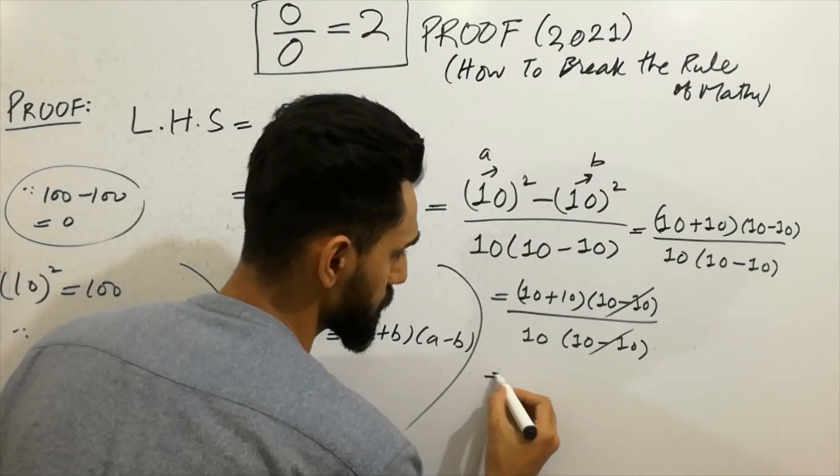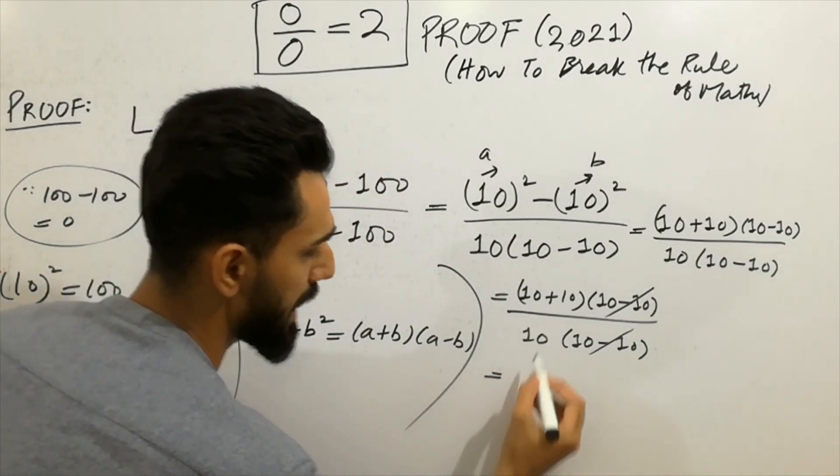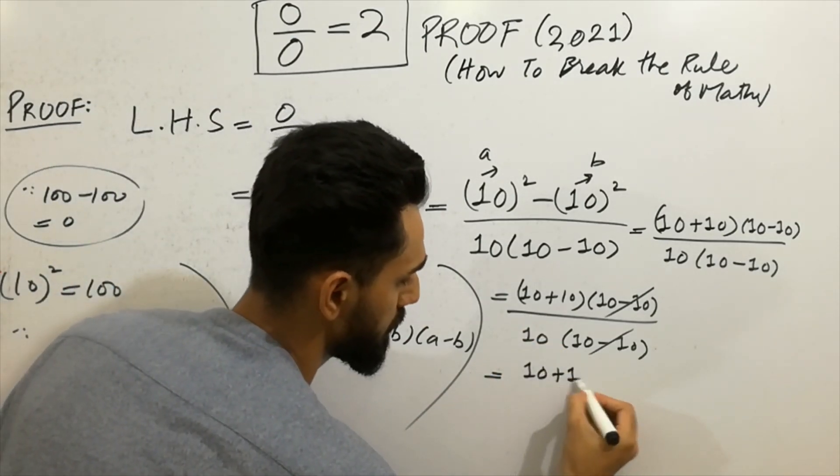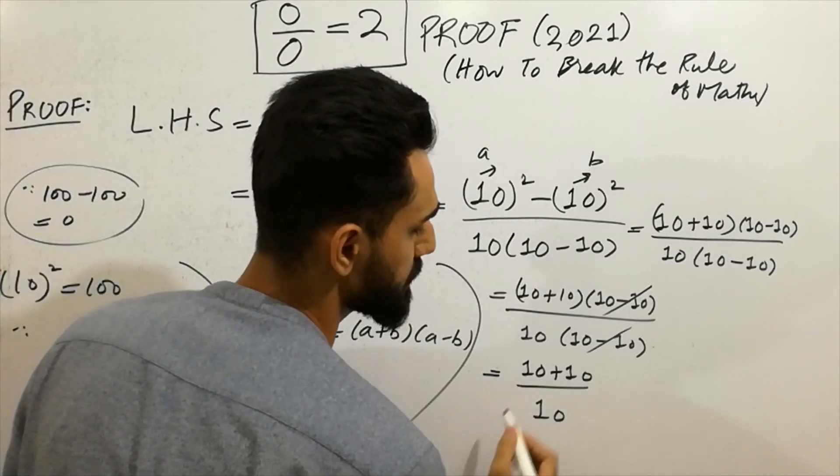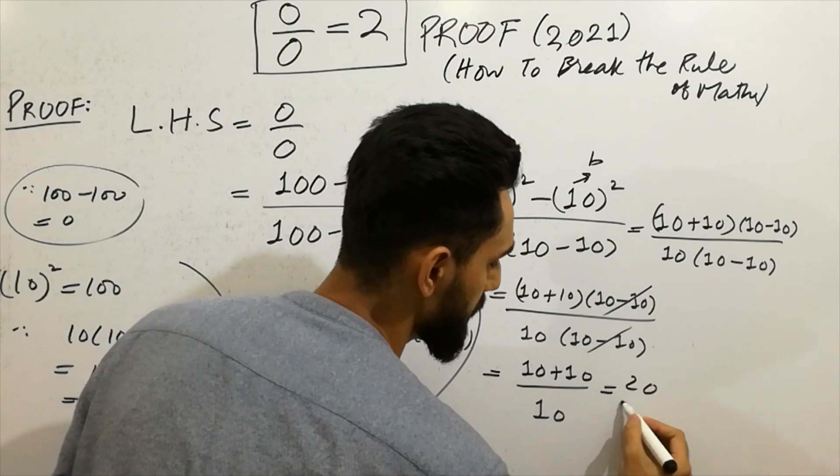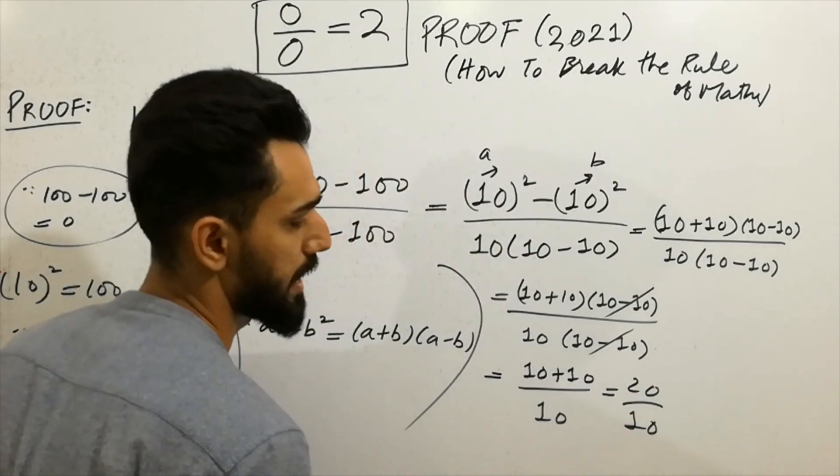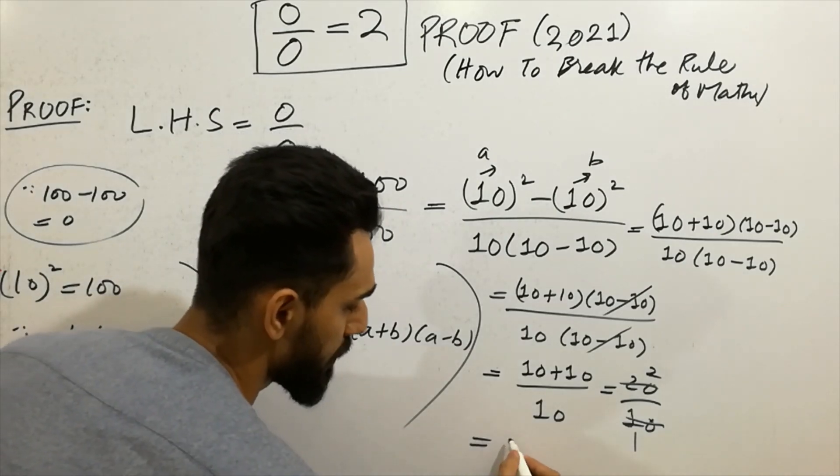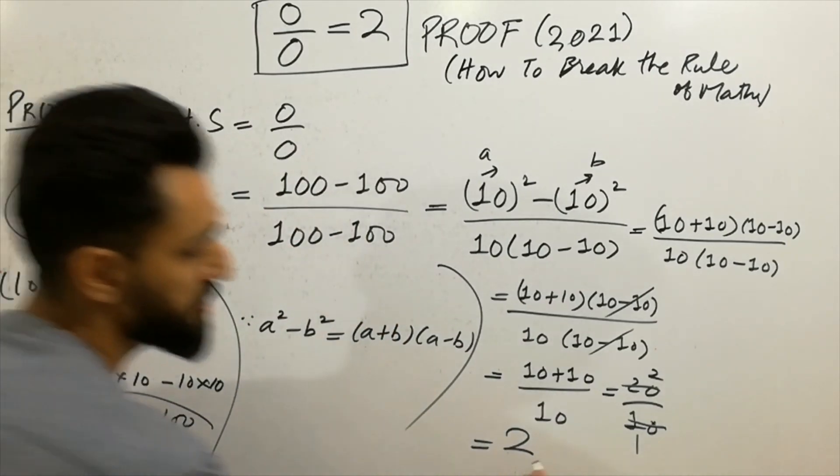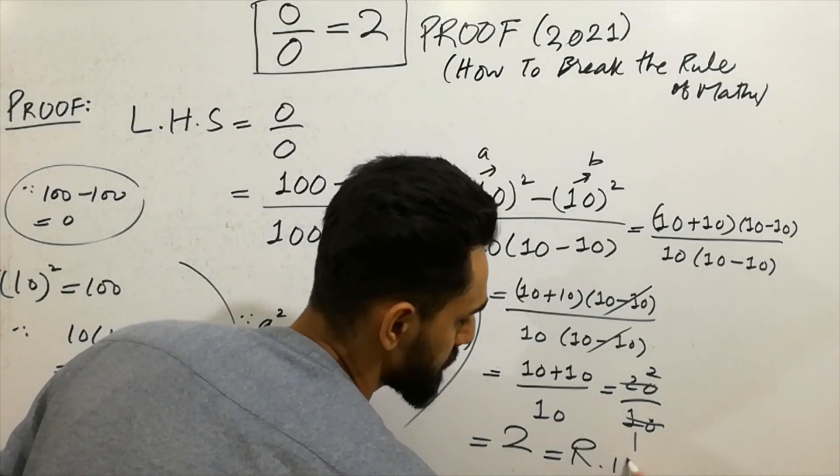Next step will be here. 10 plus 10 divided by 10. That's it. Next, 10 plus 10 will be 20 divided by 10. And next, 10 equals 10, 10 equals 20. You can evaluate 2, which is right hand side.